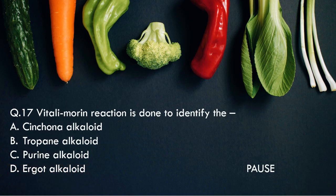Question 17: Vitaly Morine reaction is done to identify — option A, Cinchona alkaloid. Option B, Tropane alkaloid. Option C, Purine alkaloid. Option D, Ergot alkaloid. And the right answer is Tropane alkaloid. So Vitaly Morine reaction is done to identify the Tropane alkaloid.